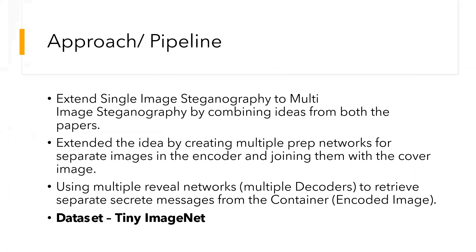Now we start with our approach and the pipeline. The first aim for us was to successfully implement single image steganography, similar to Balooja's paper. We then extended this to multi-image steganography by using a concatenated set of secret images and a cover image to get an encoded image, which looks similar to the original cover image. We then pass this through multiple decoders to get each set of secret images.